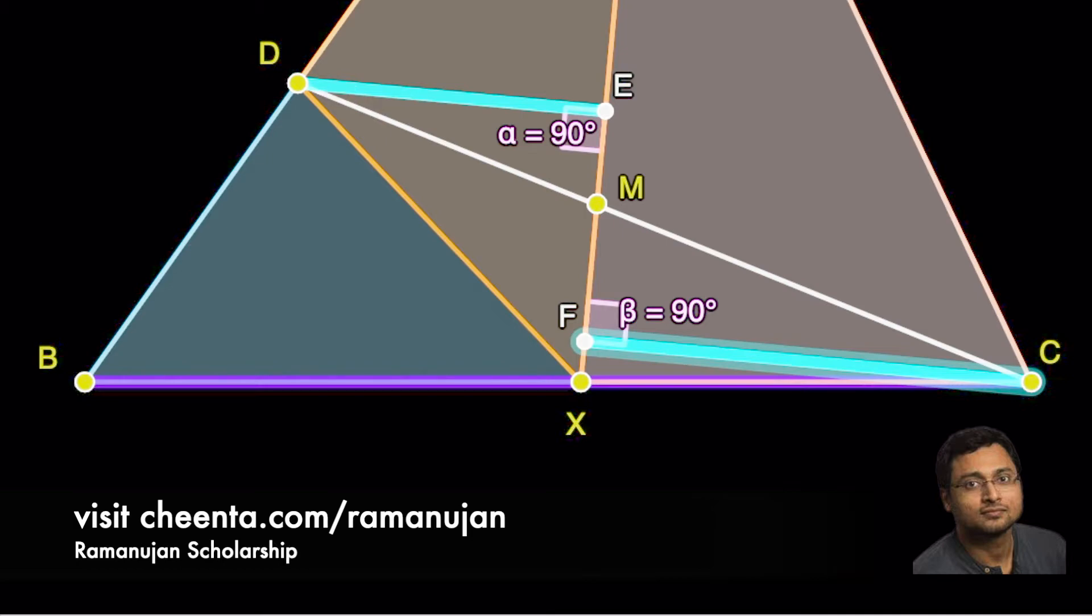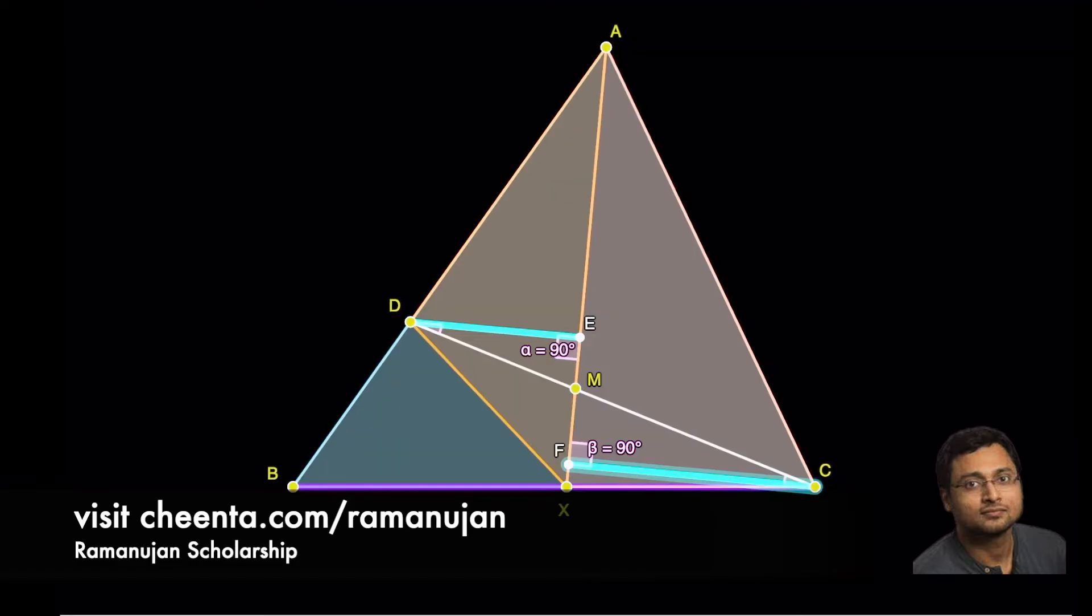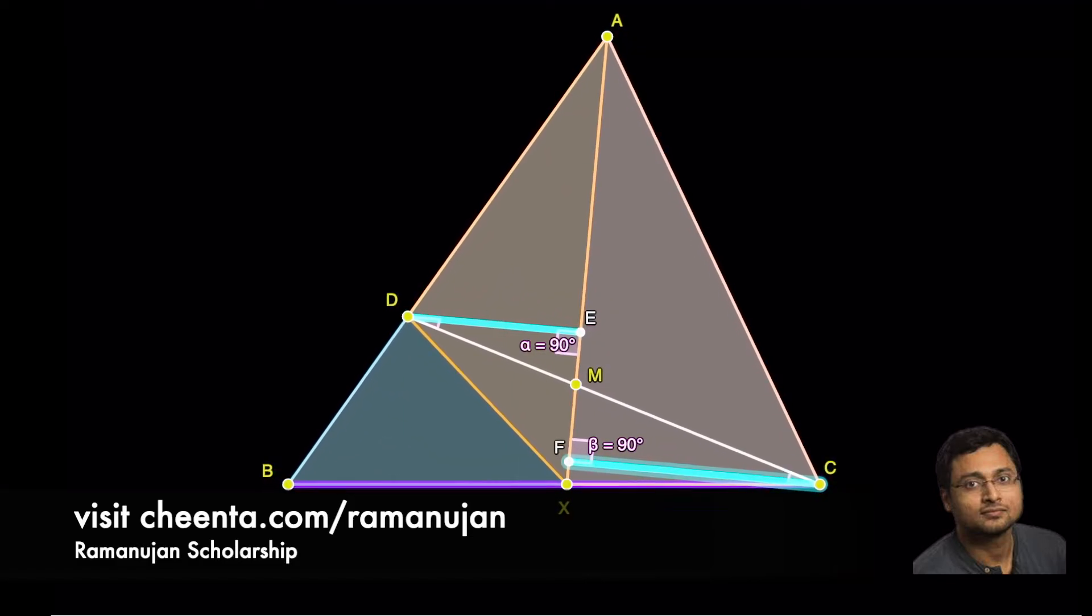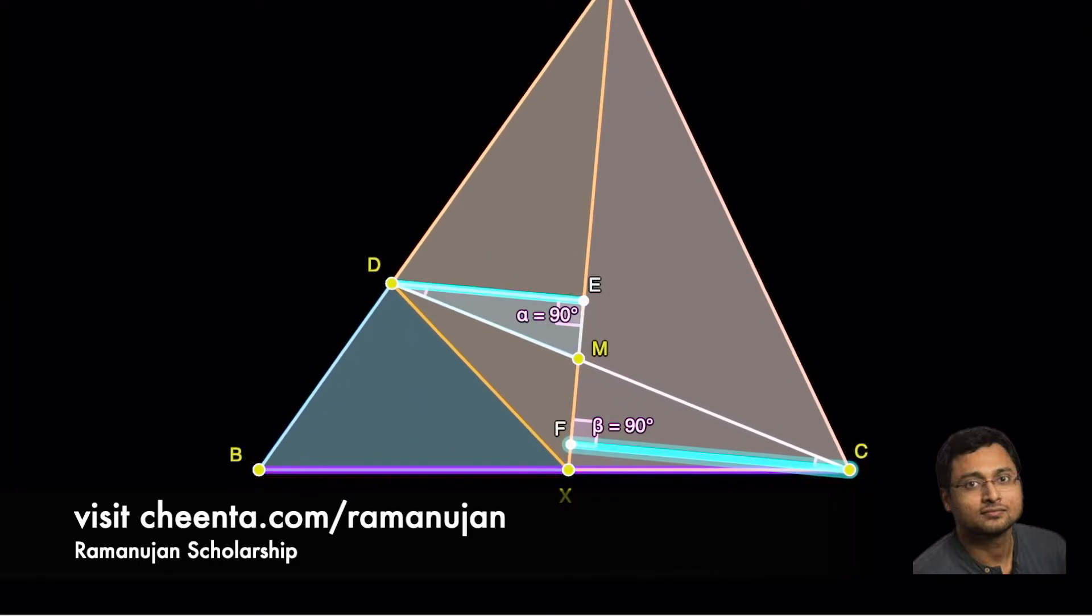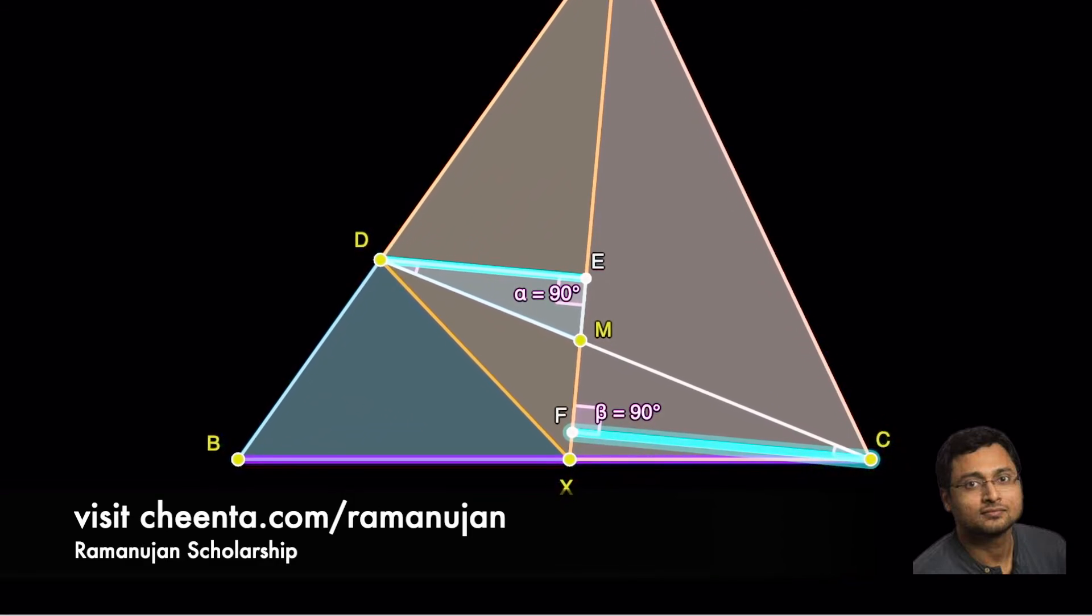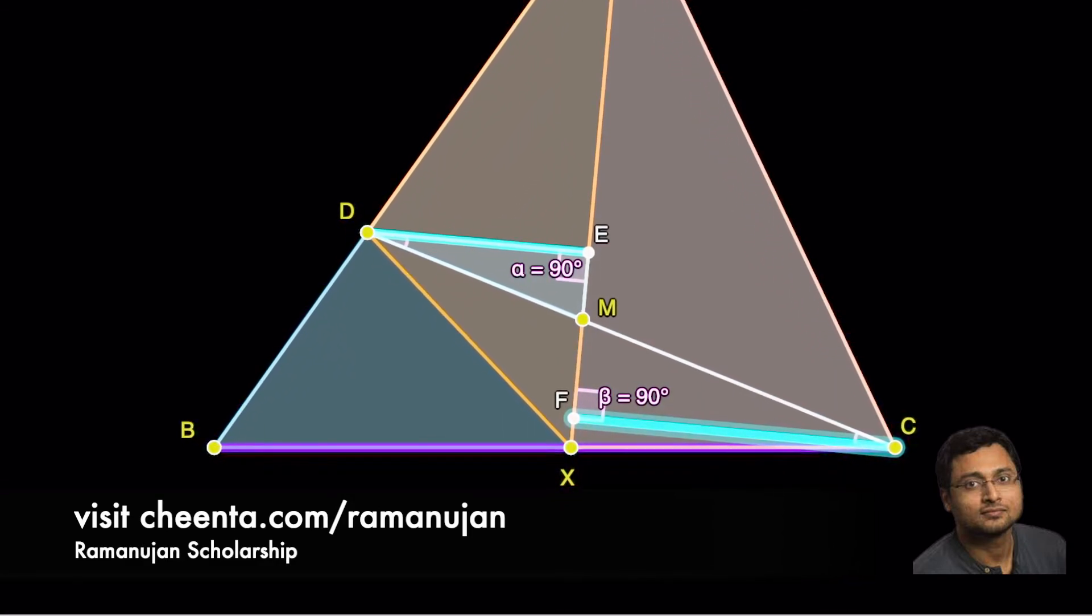Since DE is parallel to CF, angle EDM will be equal to angle MCF. Okay, now the two triangles are congruent by ASA congruency. The triangle DEM and the triangle CFM.